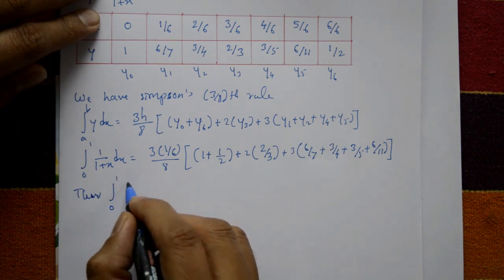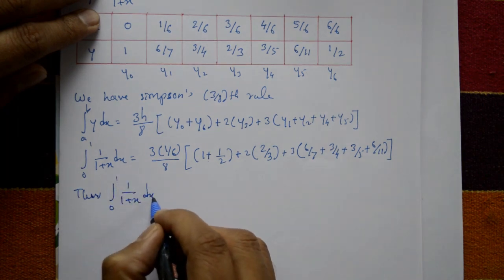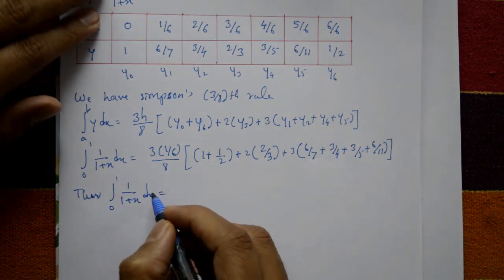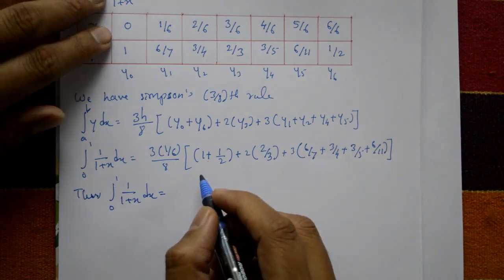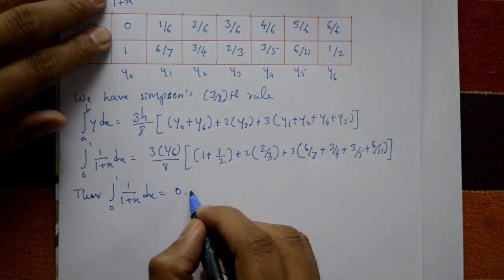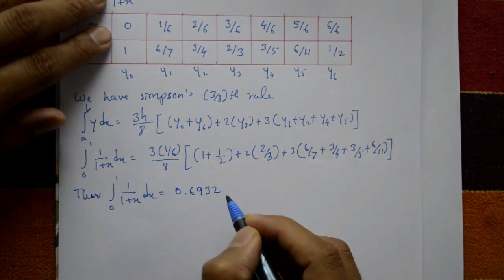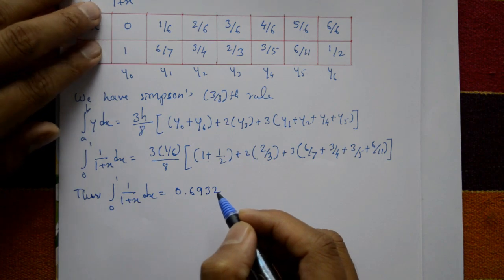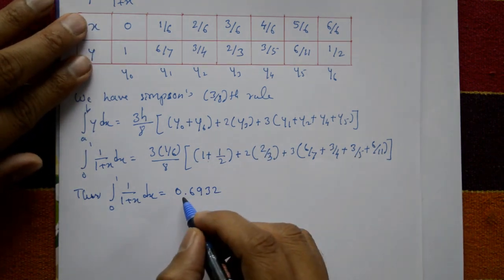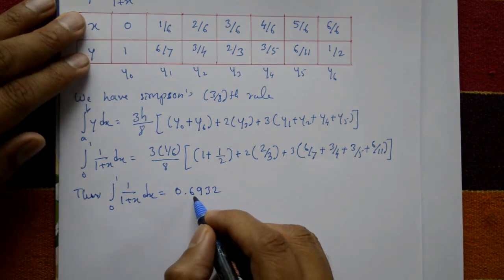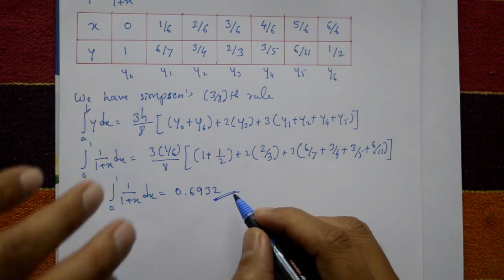Simplifying this using a calculator, the integral from 0 to 1 of 1/(1+x) dx equals 0.6932.